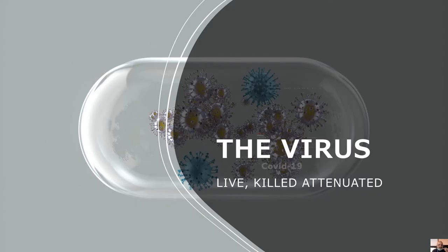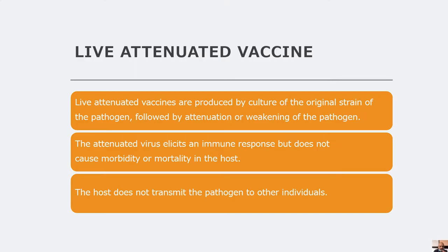Let us look at the various kinds of vaccines. We first have the virus, which can be in the live, killed, or attenuated forms. Live attenuated vaccines are produced by the culture of the original strain of the pathogen, followed by attenuation or weakening of the pathogen using chemical compounds. The attenuated virus elicits an immune response but does not cause morbidity or mortality in the host, and the host does not transmit the pathogen to other individuals.